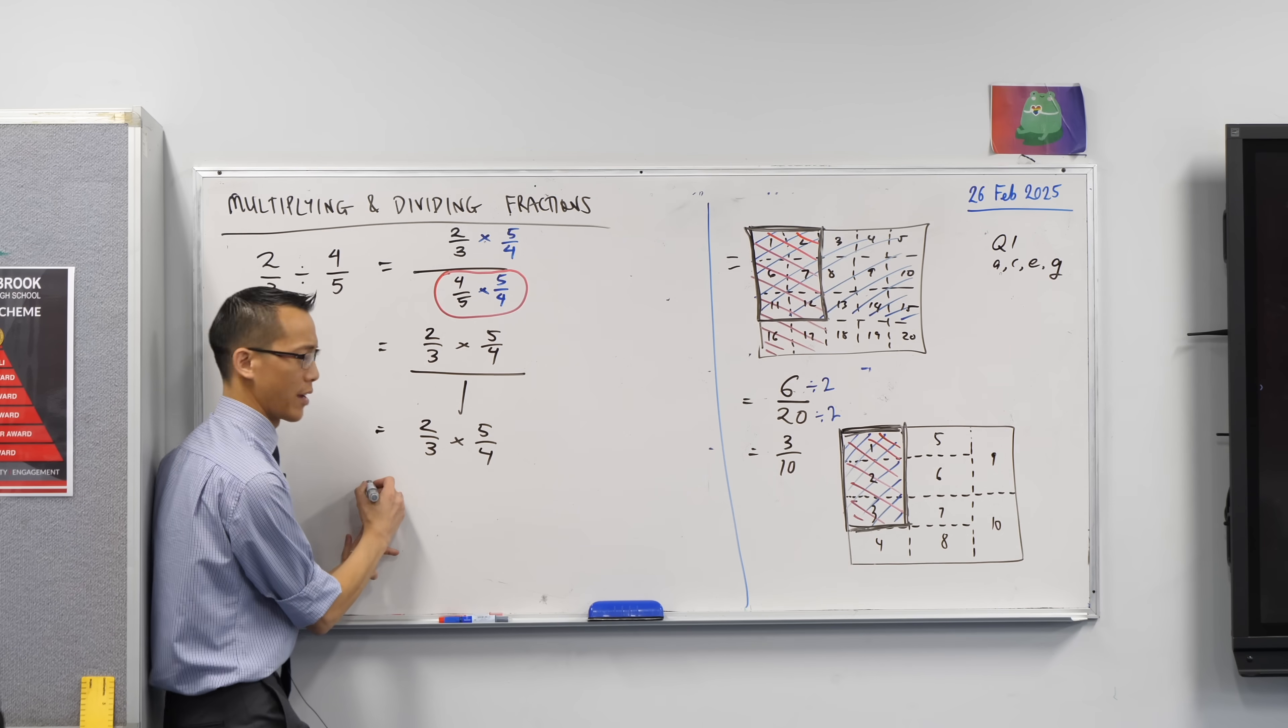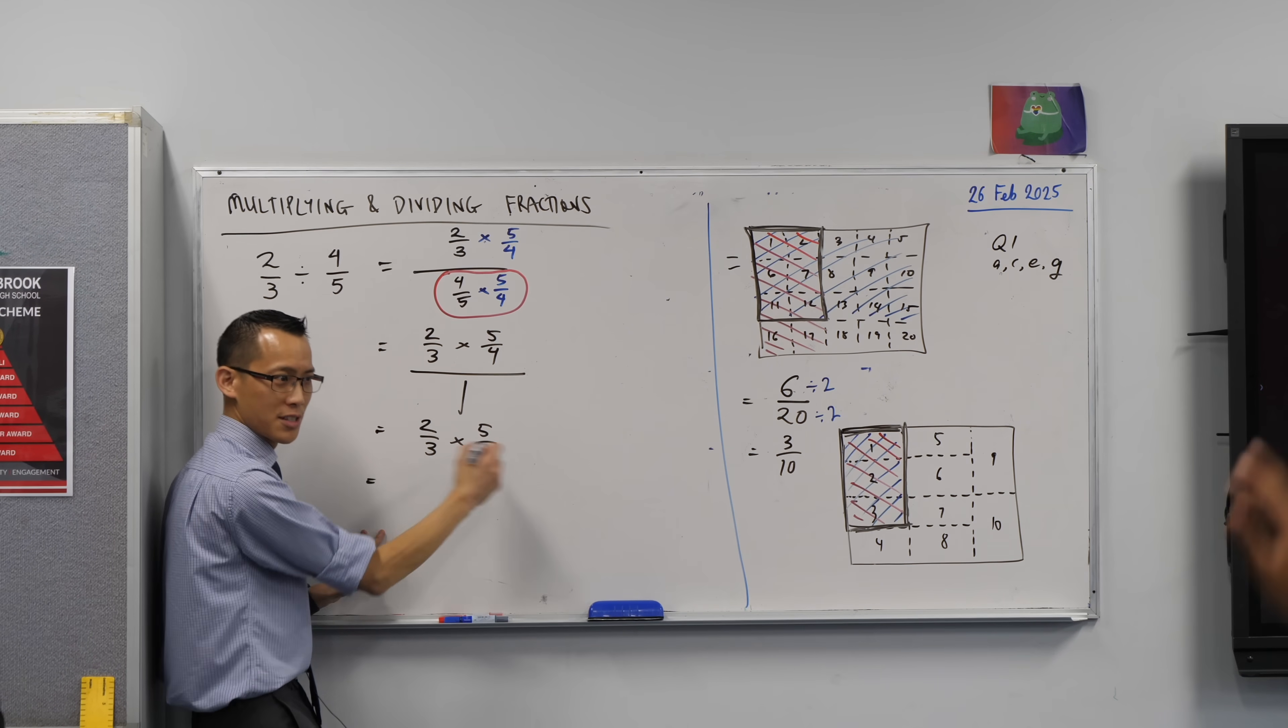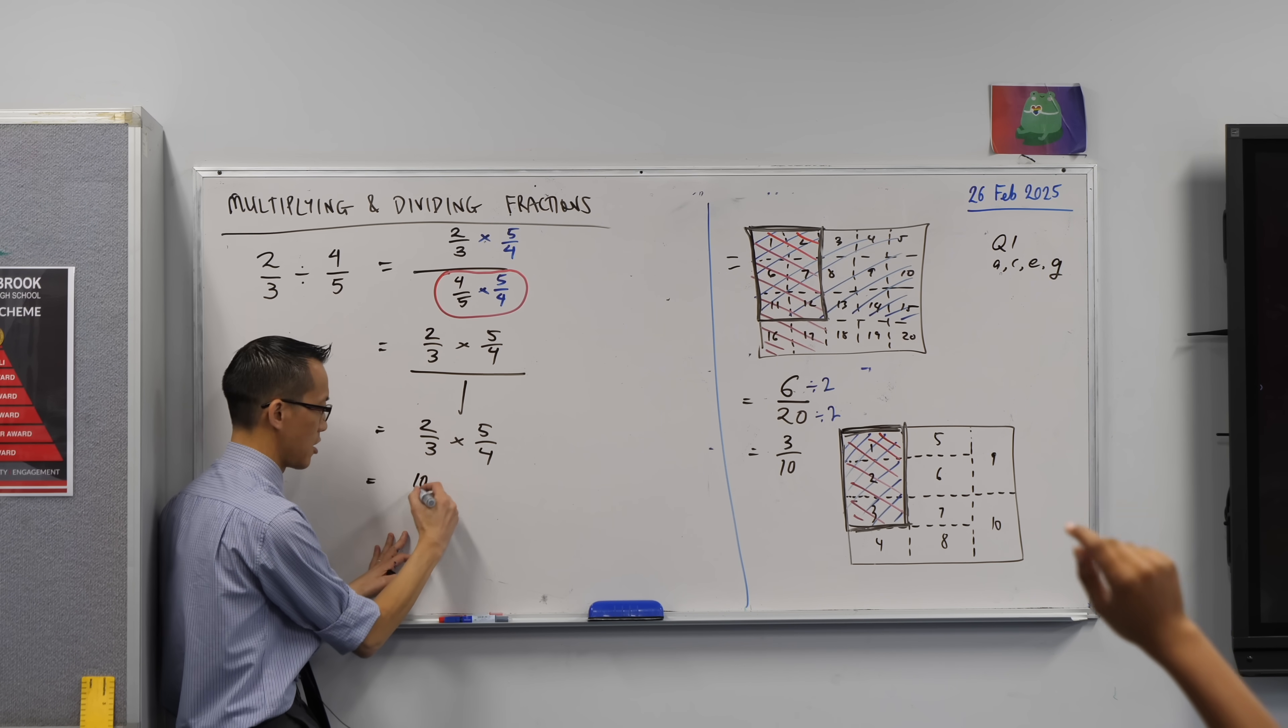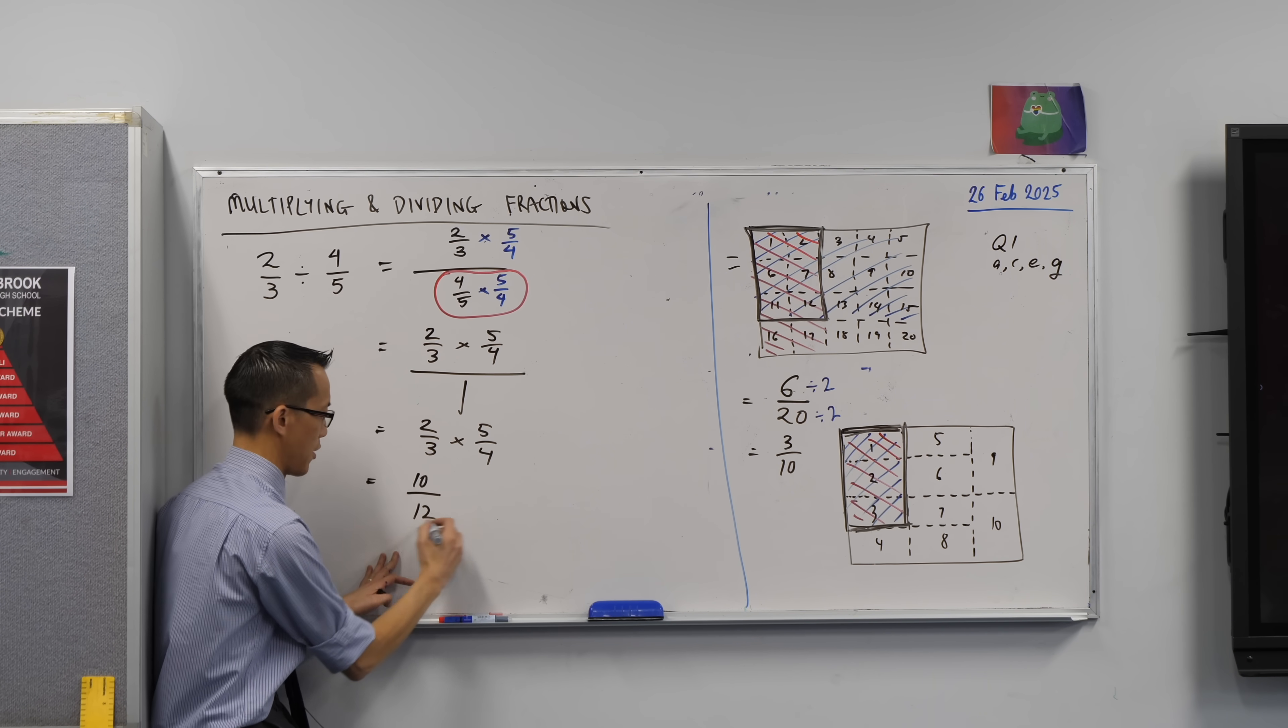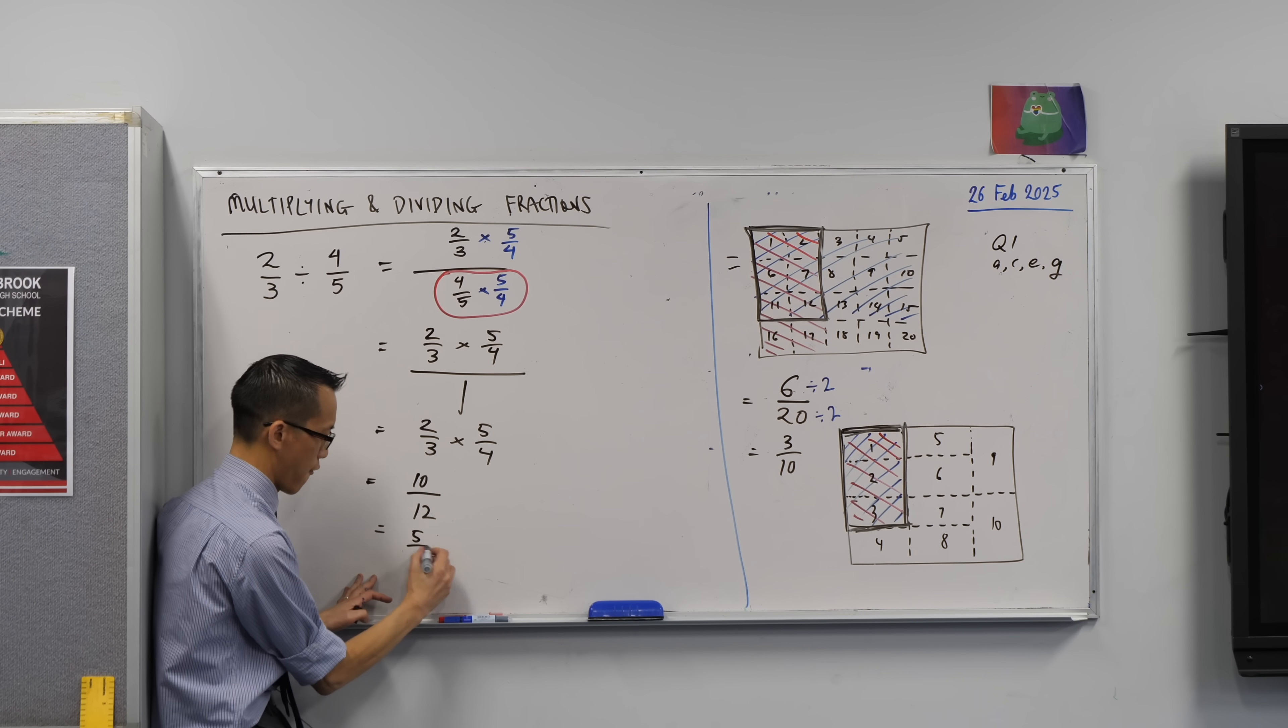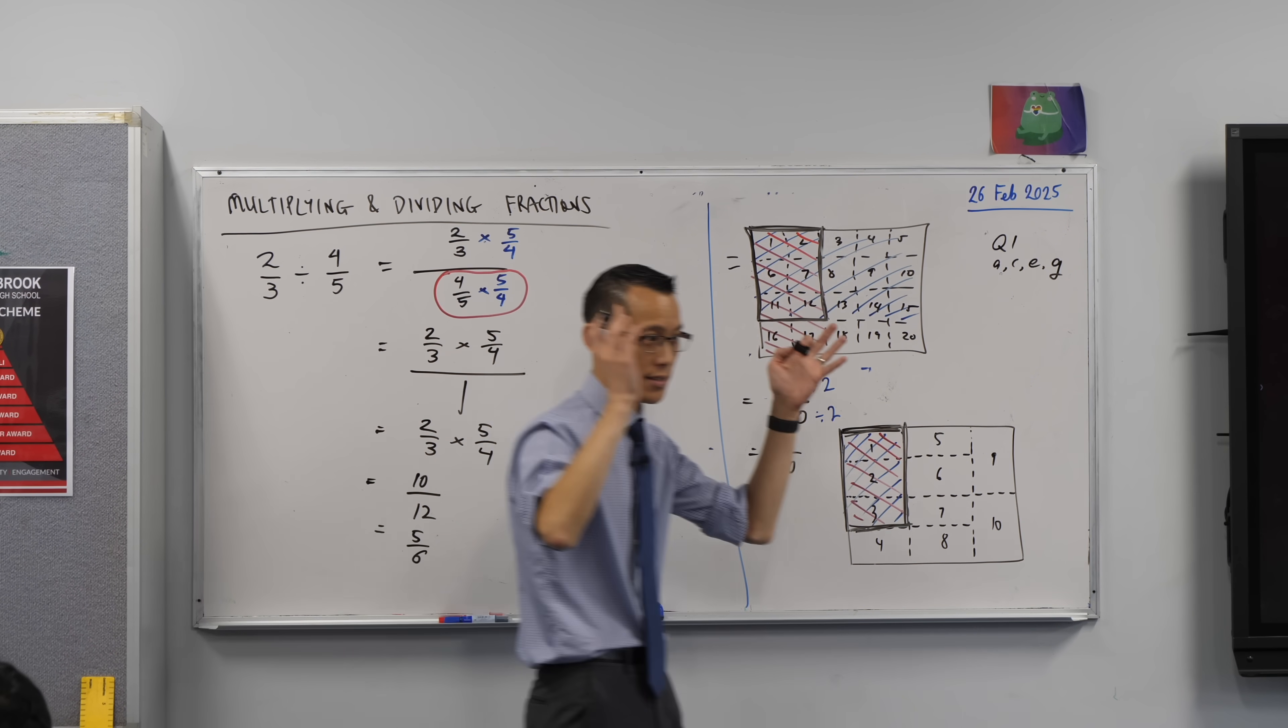What is the answer, by the way? Come on, let's just go across. Let's do it like we did before. We can do it all together. Numerator should be? 10. Denominator should be? 12. And of course that means we actually can simplify a little bit. We can go? 5 over 6. Fantastic, okay?